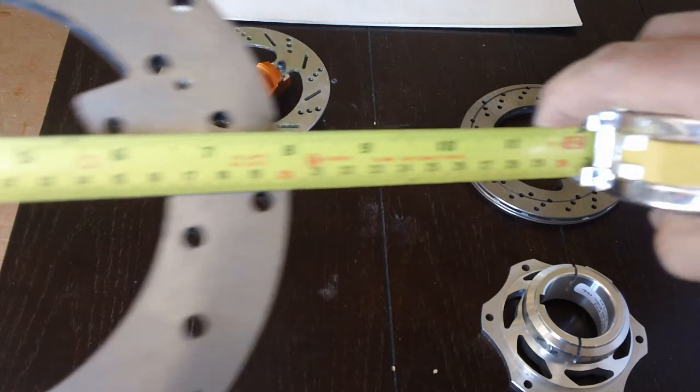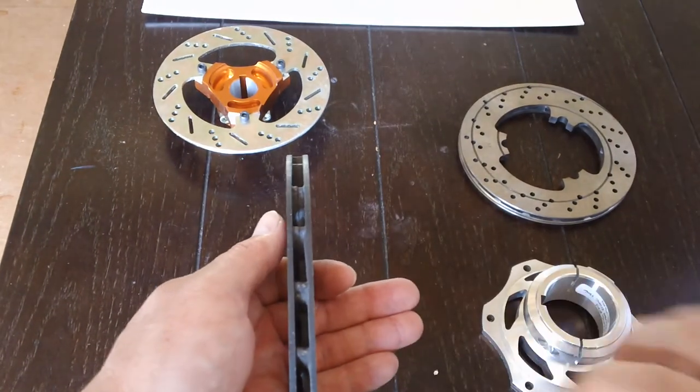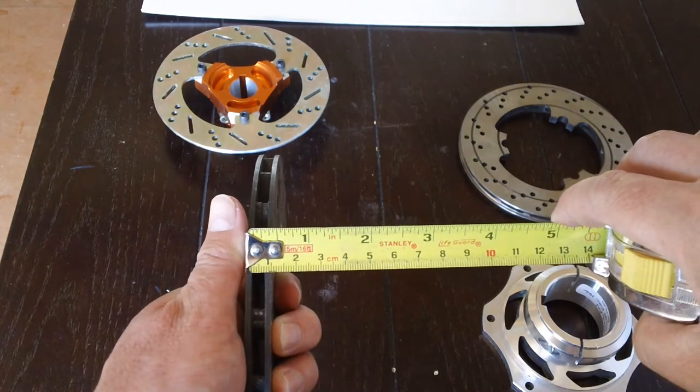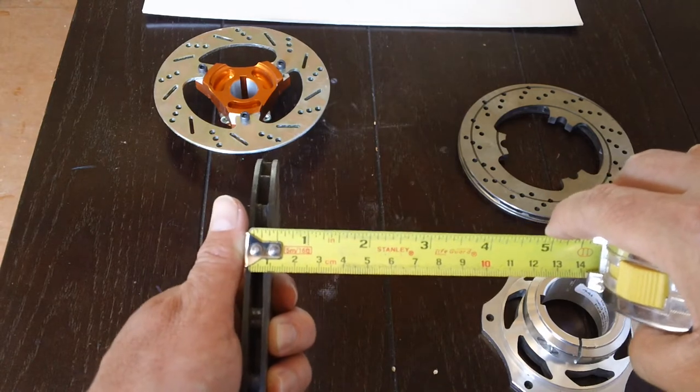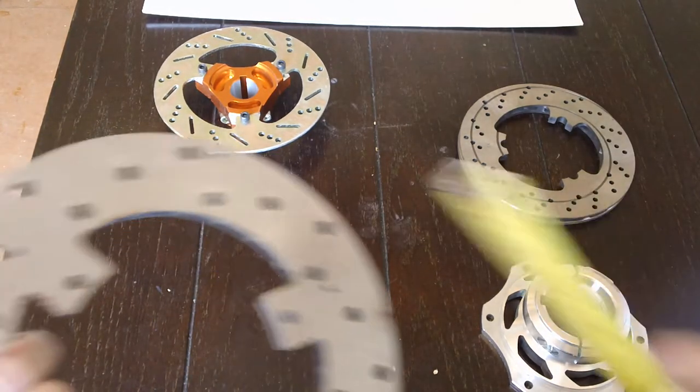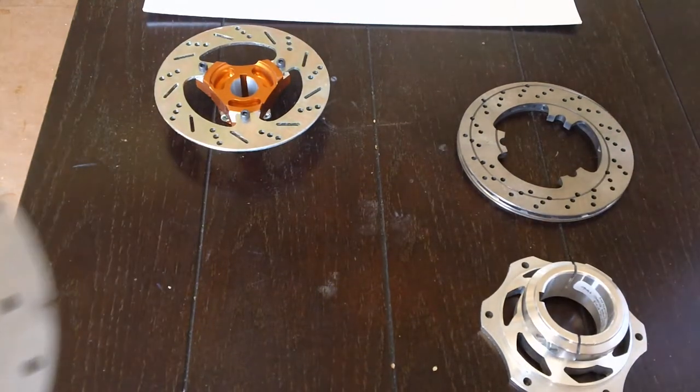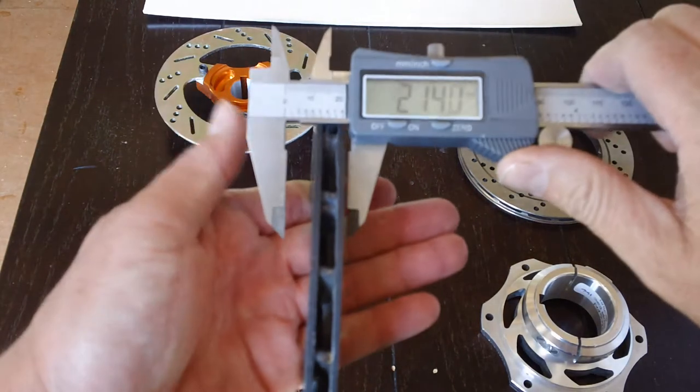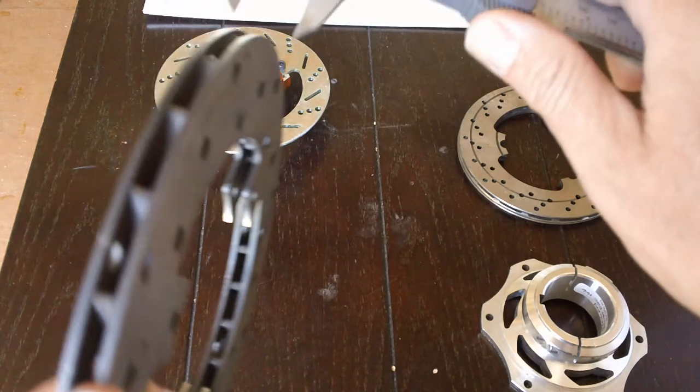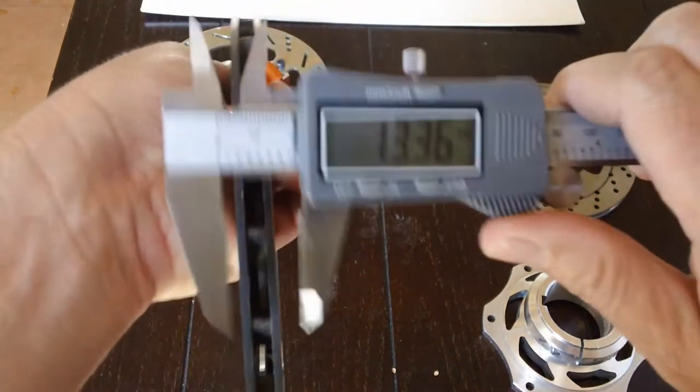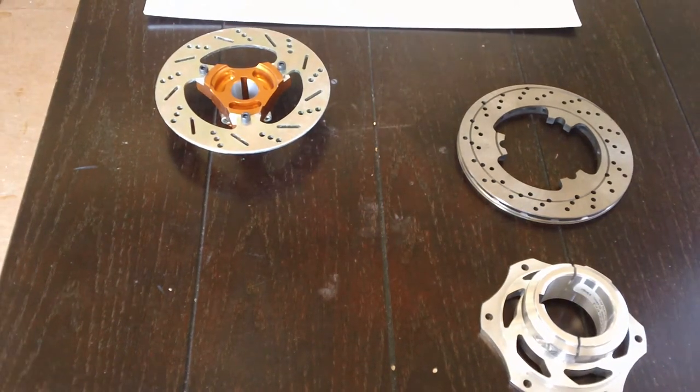Next, you want to determine: is it a vented or a solid rotor? In this situation, this is a vented rotor and we have a measurement of 10 millimeters. You could also do the tape measure for the diameter and then use the digital caliper. Make sure it is zeroed out and verify the measurement. We're getting 10.12, 10.25, so we can assume this is a 10 millimeter thick vented rotor.